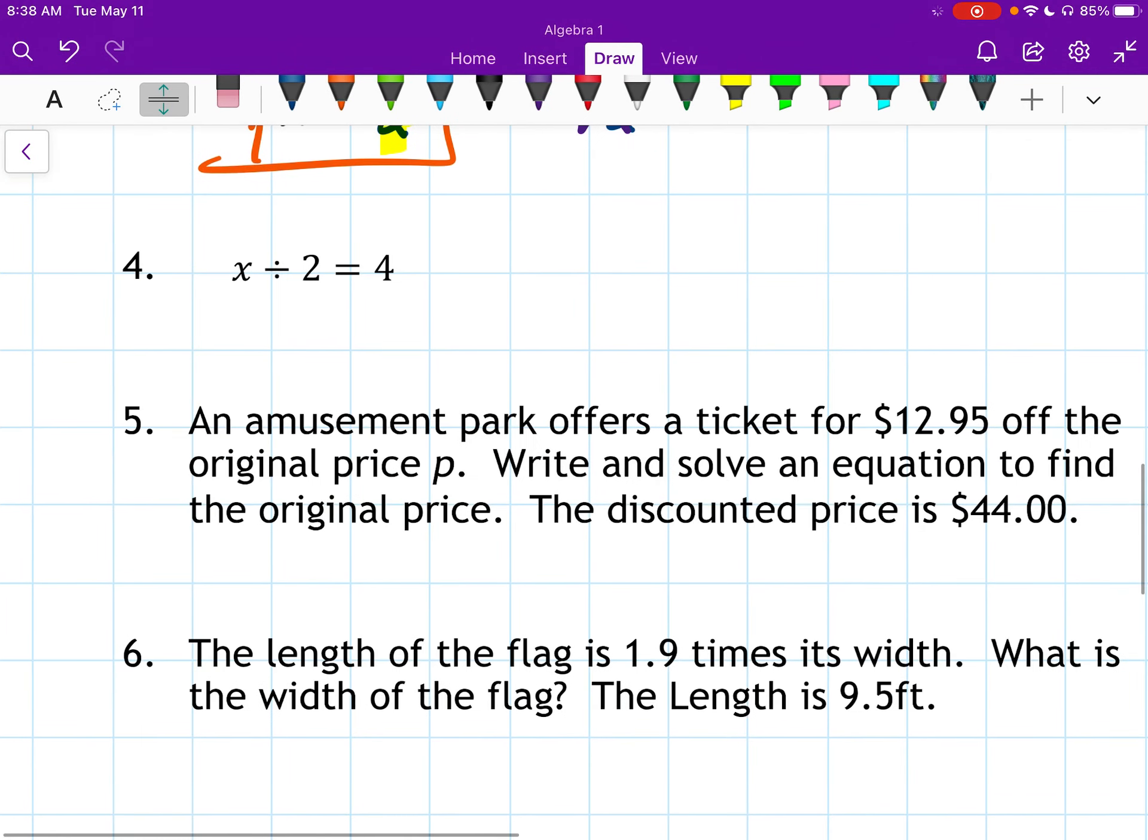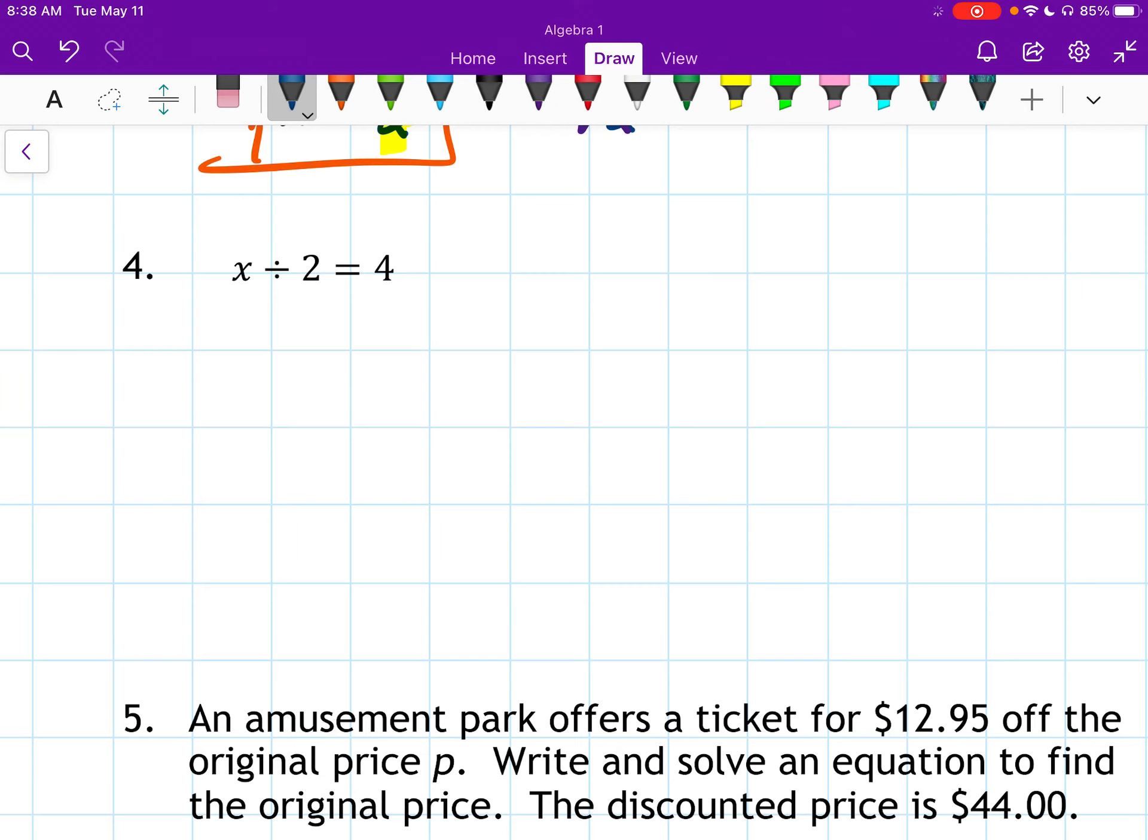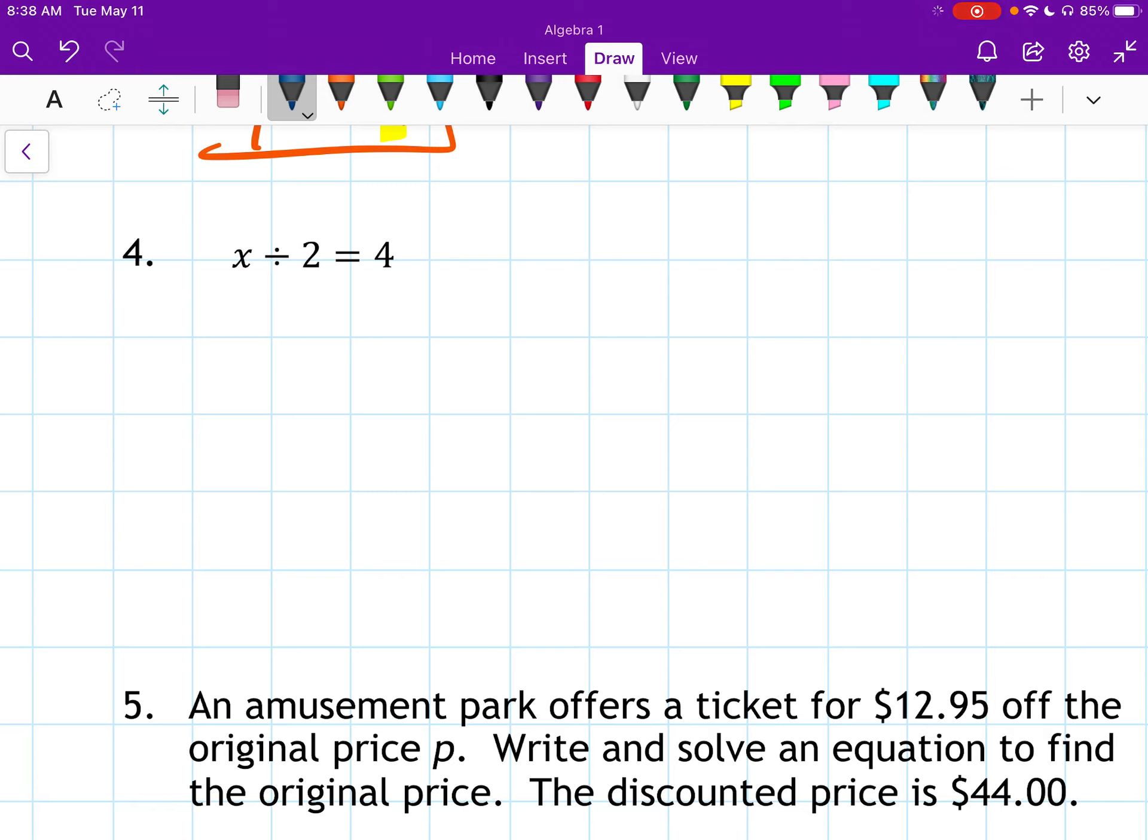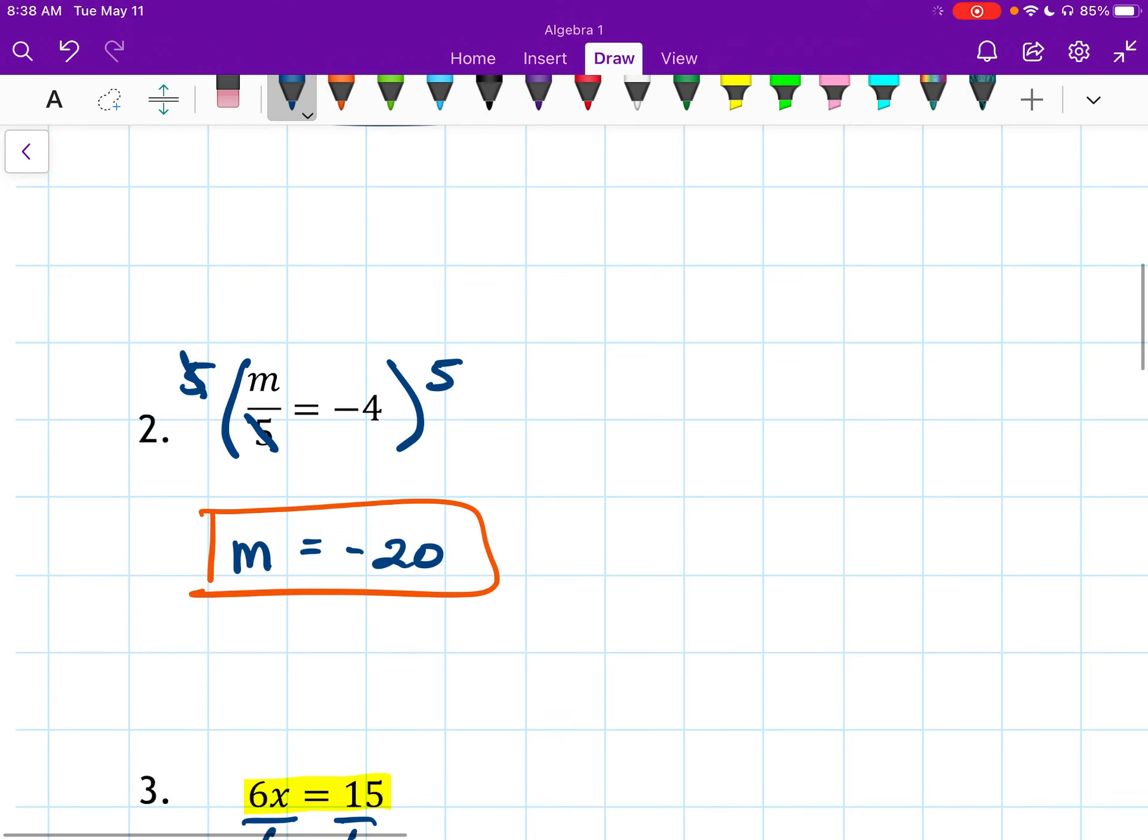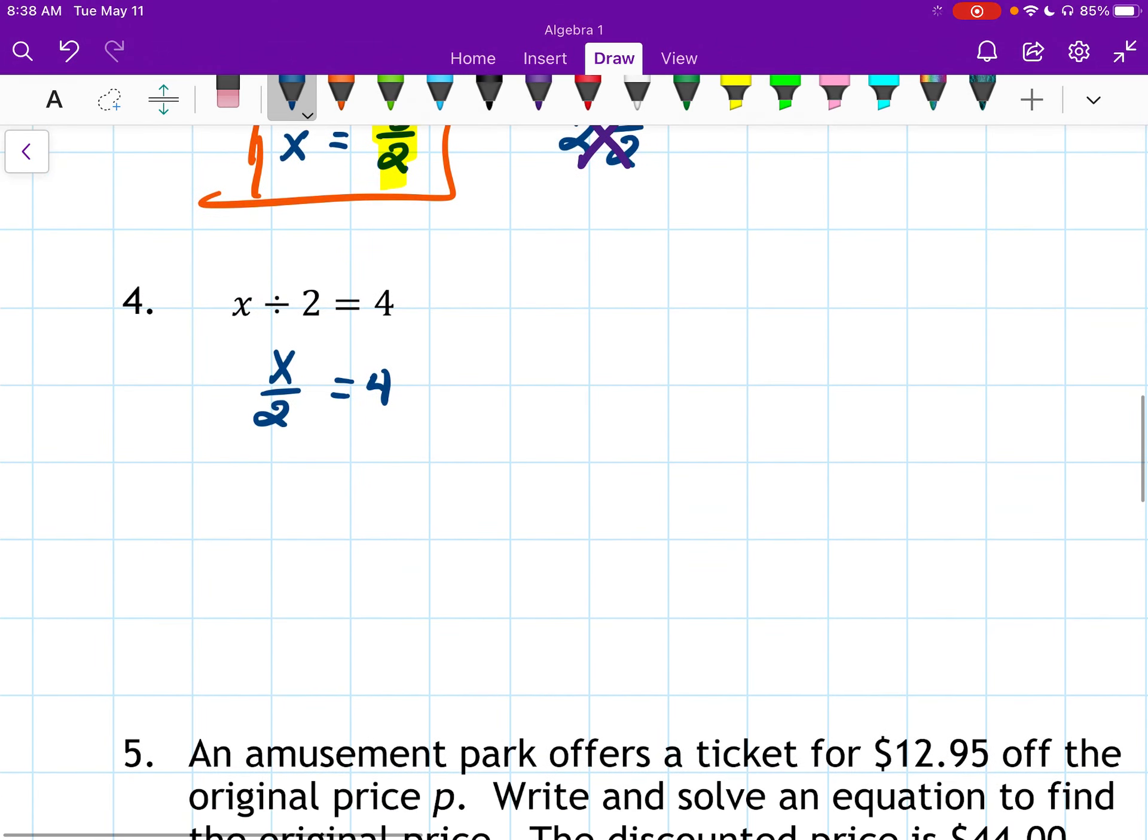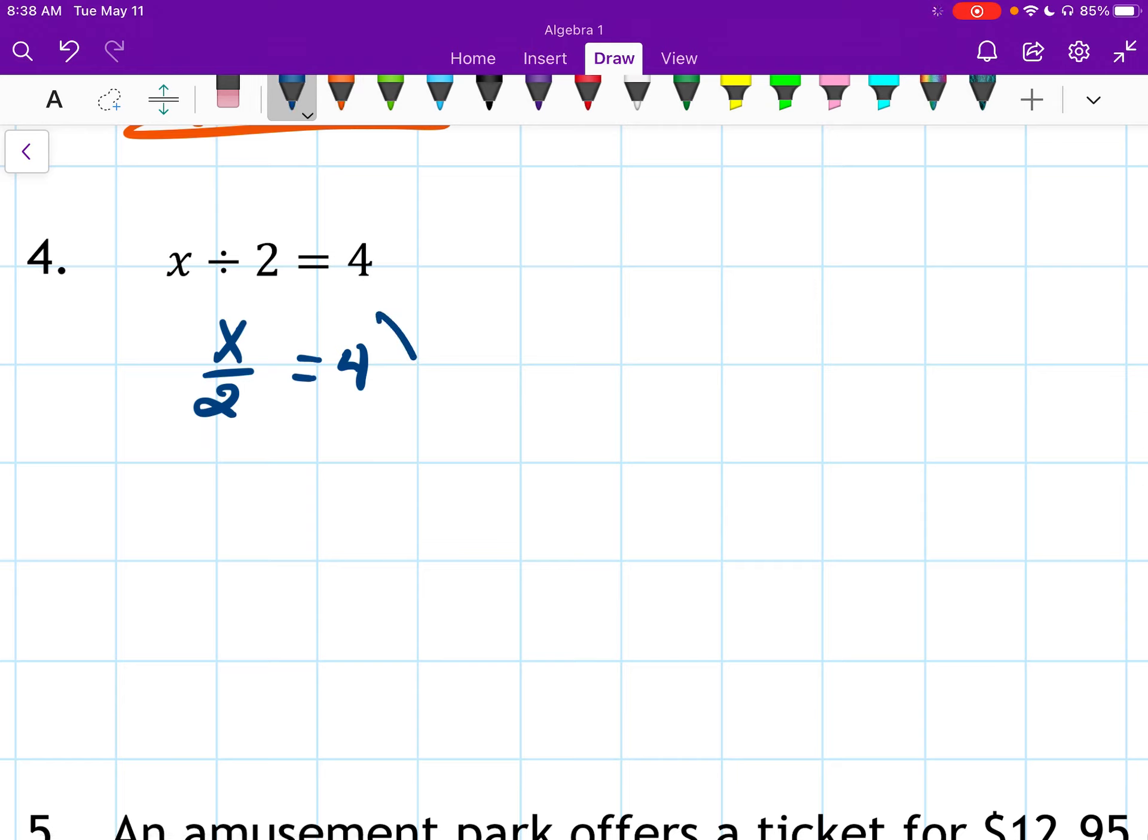Number 4. This one's listed a little bit differently. We have the division sign. Normally, we don't have the division sign anymore. It'll just be written as like a slash for like a fraction bar. So that's what I'm going to do. I'm going to rewrite this as if it was a fraction. So this will be x over 2 equals 4. Now, this looks a whole lot like number 2. We're going to multiply by our denominator. So I'm going to multiply both sides by 2. And I will have x equals 8.